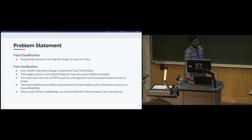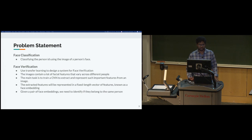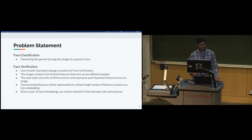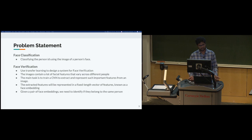Coming to the problem statement, there are two tasks. One is the classification task, which is basically N-way identification of a given face ID. The other is the verification task, where we'll use transfer learning to design a system for face verification. This task implements N-way classification of faces first, and then transfers the model weights for face verification — learning features useful for verification, which is very different from face classification.